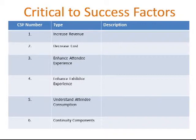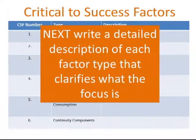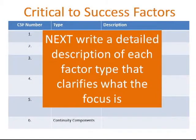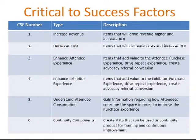To create the critical to success factors table, you simply start by listing the factors that are important to the organization or the event. Once you have the types listed, then write down a detailed description of each factor type in order to clarify what it means to you and your team.